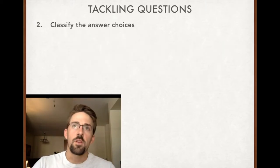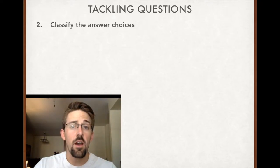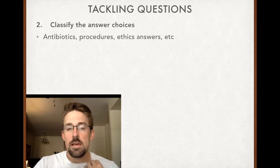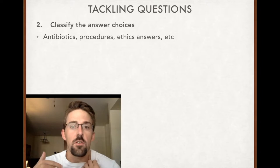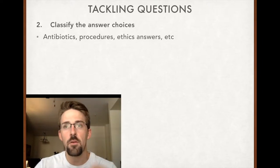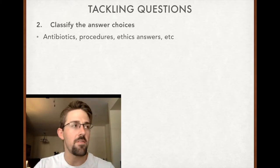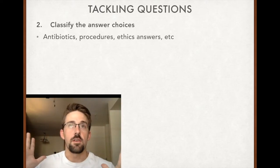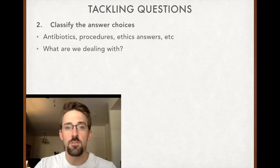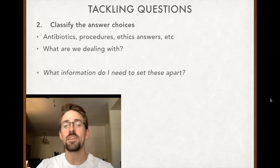After we read this question and we know what am I trying to figure out, you read the answer choices. Is it five antibiotics? Is it procedures? Sometimes you'll get lucky and it's ethics answers. The reason that's important is they'll give you this long stem about some traumatic event, and this patient had this type of surgery and had these subsequent diagnoses and take them back to the OR. And you're sitting here trying to work through all the types of shock that they've been in and out of. And it turns out it's a question about living will. You're just figuring out what you're dealing with. What information do I need to set these apart?